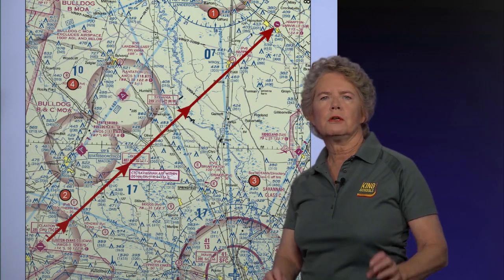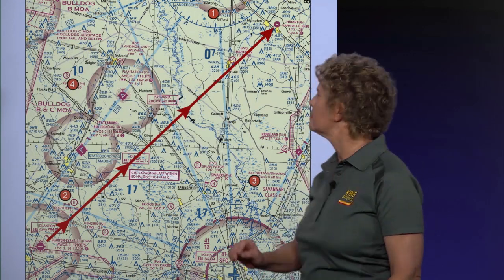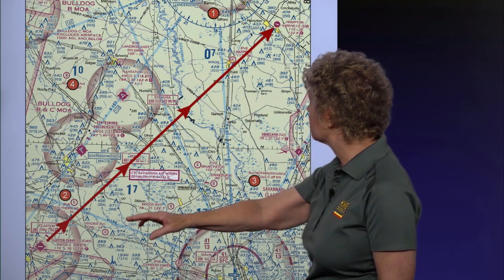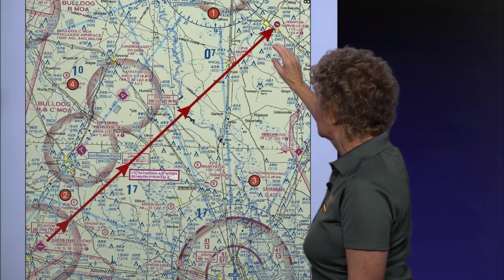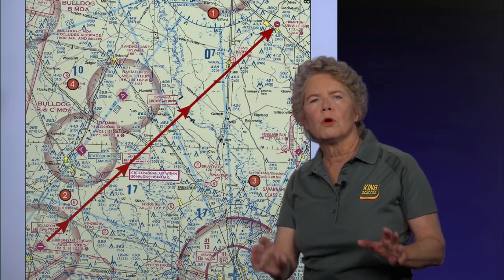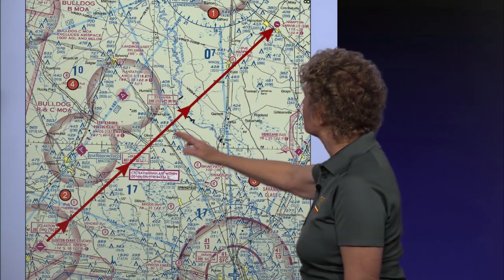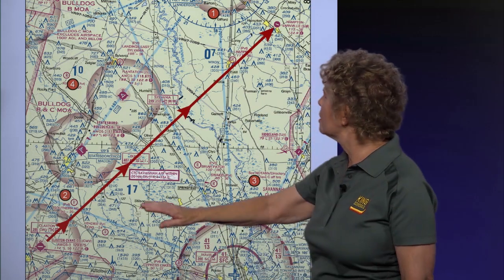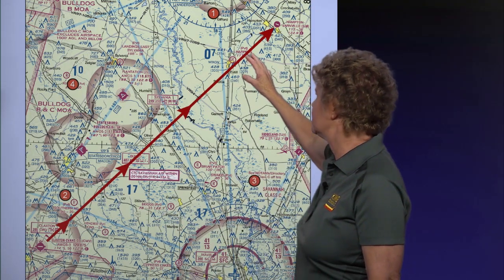The first thing you want to do is draw a course line between your two airports — from Claxton Evans County Airport up to Hampton-Varneville Airport, like we've done here. Once you have your course line drawn, estimate the direction you're going to be flying. As you can see here visually, you're going to be flying essentially northeast bound.